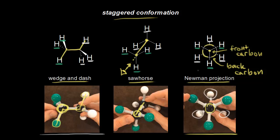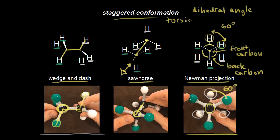Let's talk a little bit more about Newman projections. We can talk about the angle between a hydrogen in white and a hydrogen in green — the angle between these is 60 degrees. This angle is called the dihedral angle, or the torsional angle, also called the torsion angle. This angle between the hydrogens will be important when you're talking about conformations. Here the angle is 60 degrees, which means these hydrogens are not right on top of each other — there's space between the hydrogens on the Newman projection. The green hydrogens are staggered compared to the white hydrogens, and that's why we call this the staggered conformation of ethane.